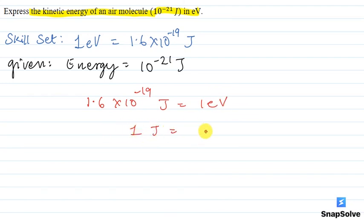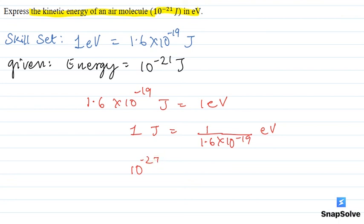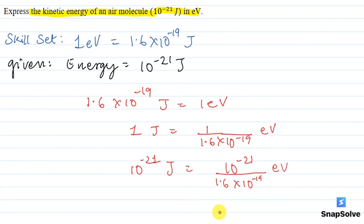1 joule is equal to 1 by 1.6 into 10 raised to the power minus 19 electron volt. So the energy of an air molecule, 10 raised to the power minus 21 joules, would be equal to 1 divided by 1.6 into 10 raised to the power minus 19, giving 0.0062 electron volt.